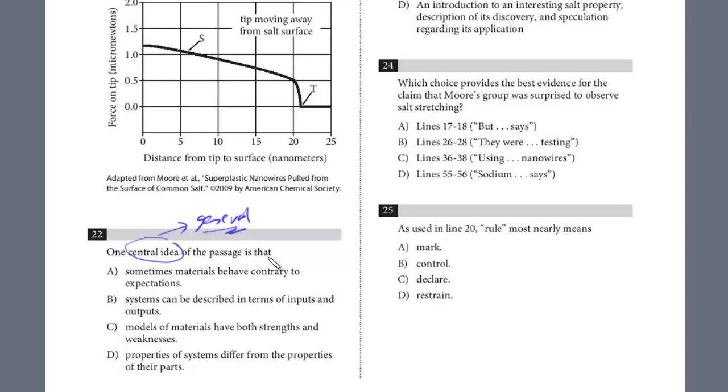One central idea of the passage: 'Sometimes materials behave contrary to expectations.' This is the answer. Just to review for general questions, you will never see—remember we read the first paragraph—that salt, which is typically inflexible, becomes very flexible in the nanoworld. That's too explicit. They never use explicit language. They use really broad general language.